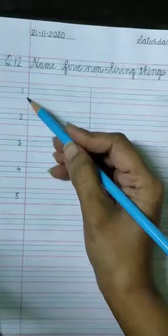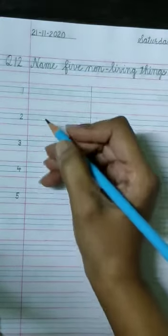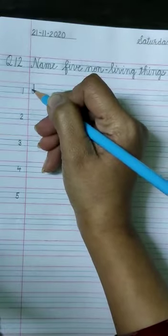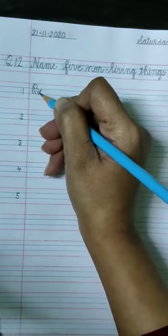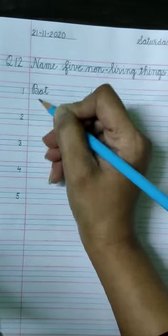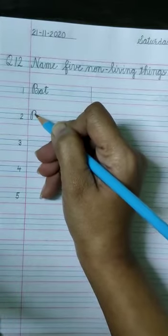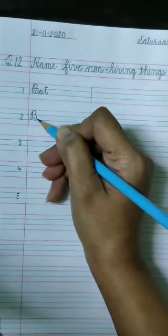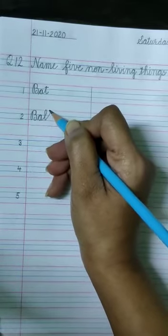Then write numbers from 1 to 5. Now write on number 1: bat, and the spelling is B-A-T. Number 2: ball, and the spelling is B-A-L-L.